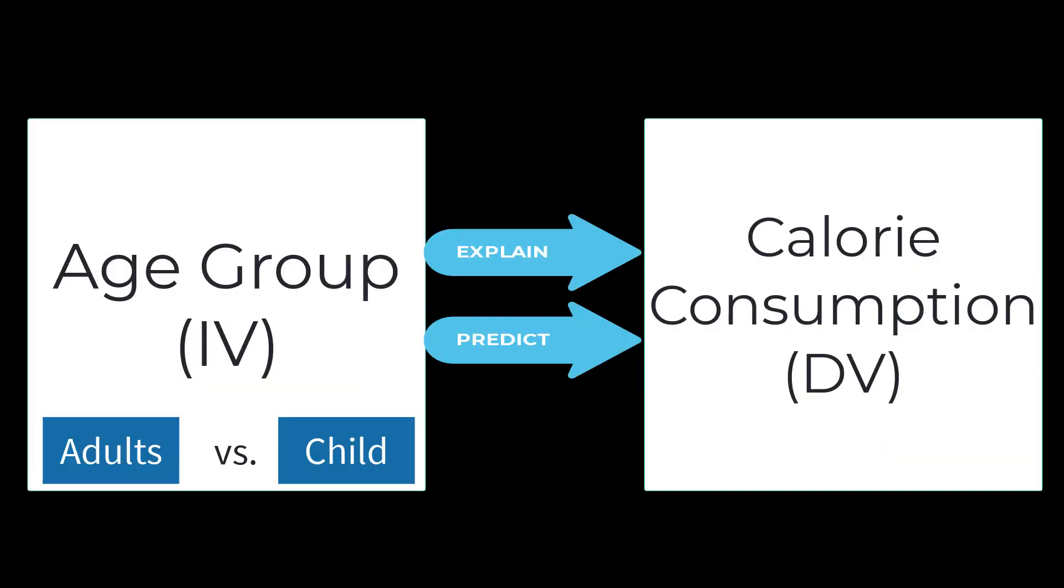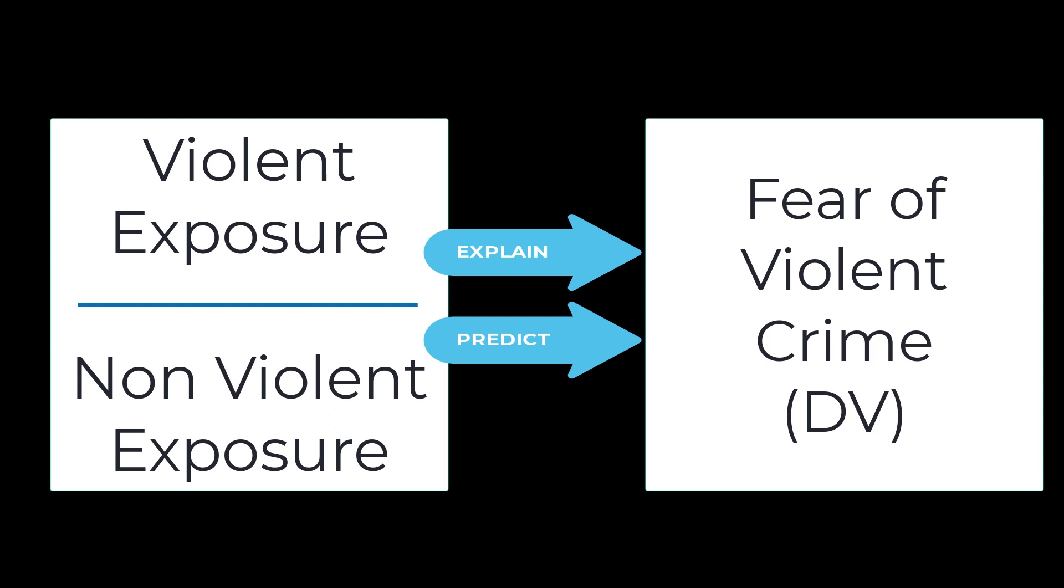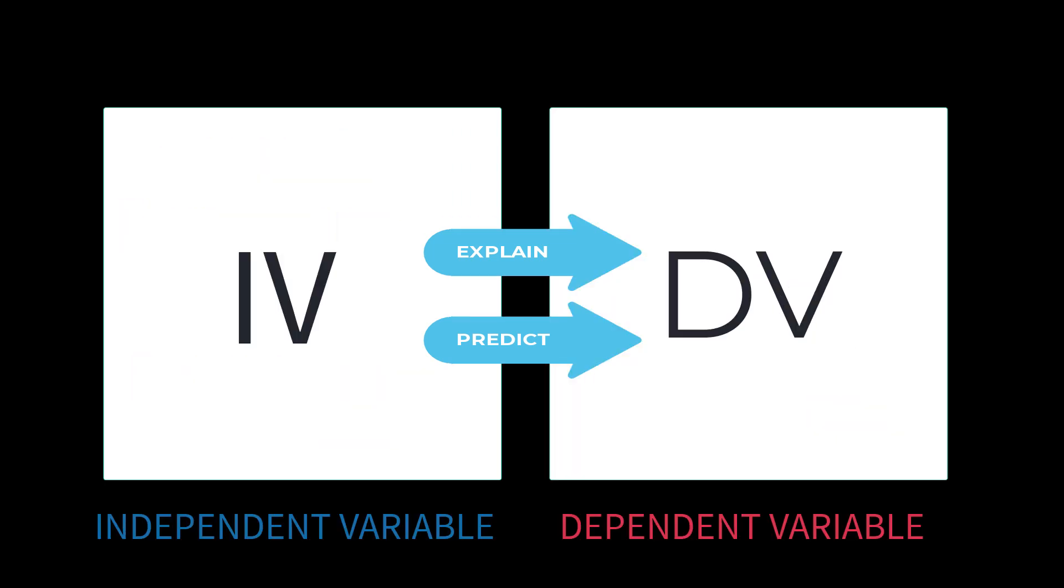Notice that these are not two independent variables, but there are two groups within a single independent variable called film exposure. So far in this video, we've identified two examples of difference tests. We looked at differences between adults and children in their calorie consumption, and we also looked at difference in reported fear of violent crime according to film exposure. Notice that in both of these examples of difference, there was the presence of a categorical independent variable. By this we mean the researcher manipulated the independent variable by forming groups. For difference testing, this makes sense because if you're looking for differences in the dependent variable, you would have to compare groups to find that difference.